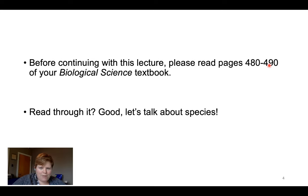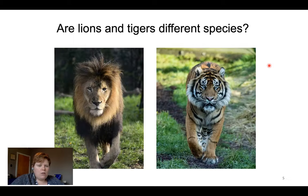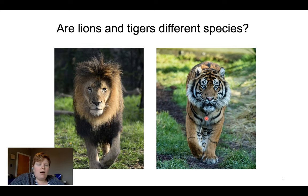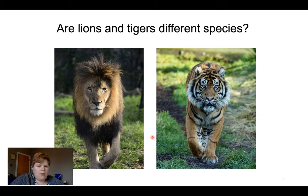Hopefully you've paused this video, found your book, and read those 10 pages. Now we can come back and talk. If we were in class, I would ask: are lions — Panthera leo — and Panthera tigris different species? Well, clearly they have two different names, which is evidence for them being two different species. But let's think about that as we visit these different species concepts.